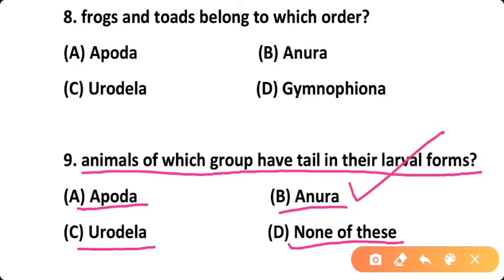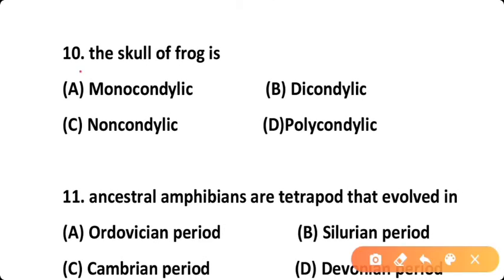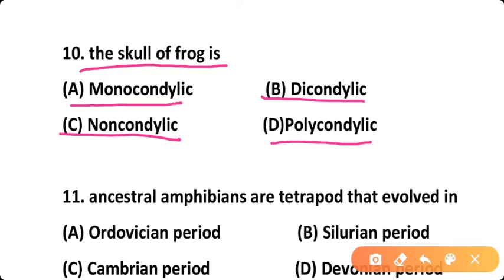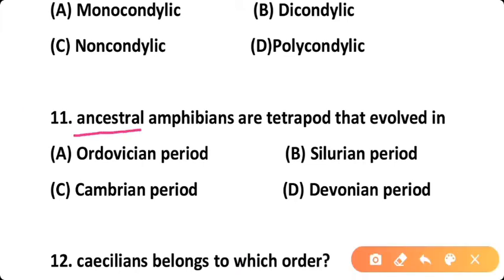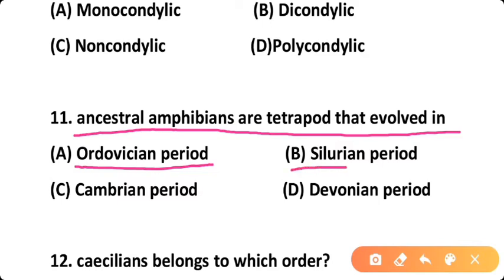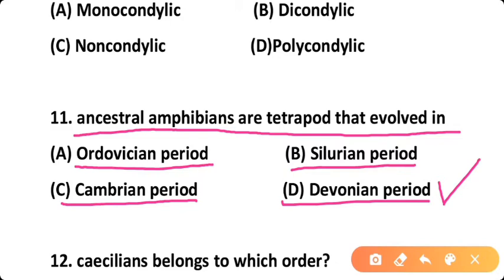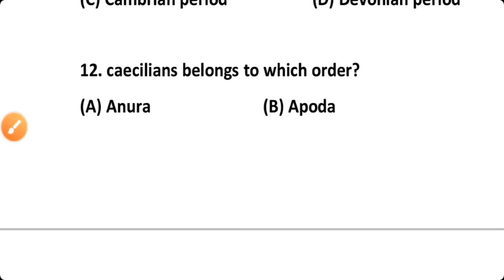Question ten: The skull of frog is — Option A: monocondylic, Option B: dicondylic, Option C: non-condylic, Option D: polycondylic. Correct answer is Option B — dicondylic means a skull having two occipital condyles. Question eleven: Ancestral amphibians are tetrapods that evolved in — Option A: Ordovician, Option B: Silurian, Option C: Cambrian, Option D: Devonian period. Correct answer is Option D — ancestral amphibians evolved during the Devonian period of the Paleozoic era.